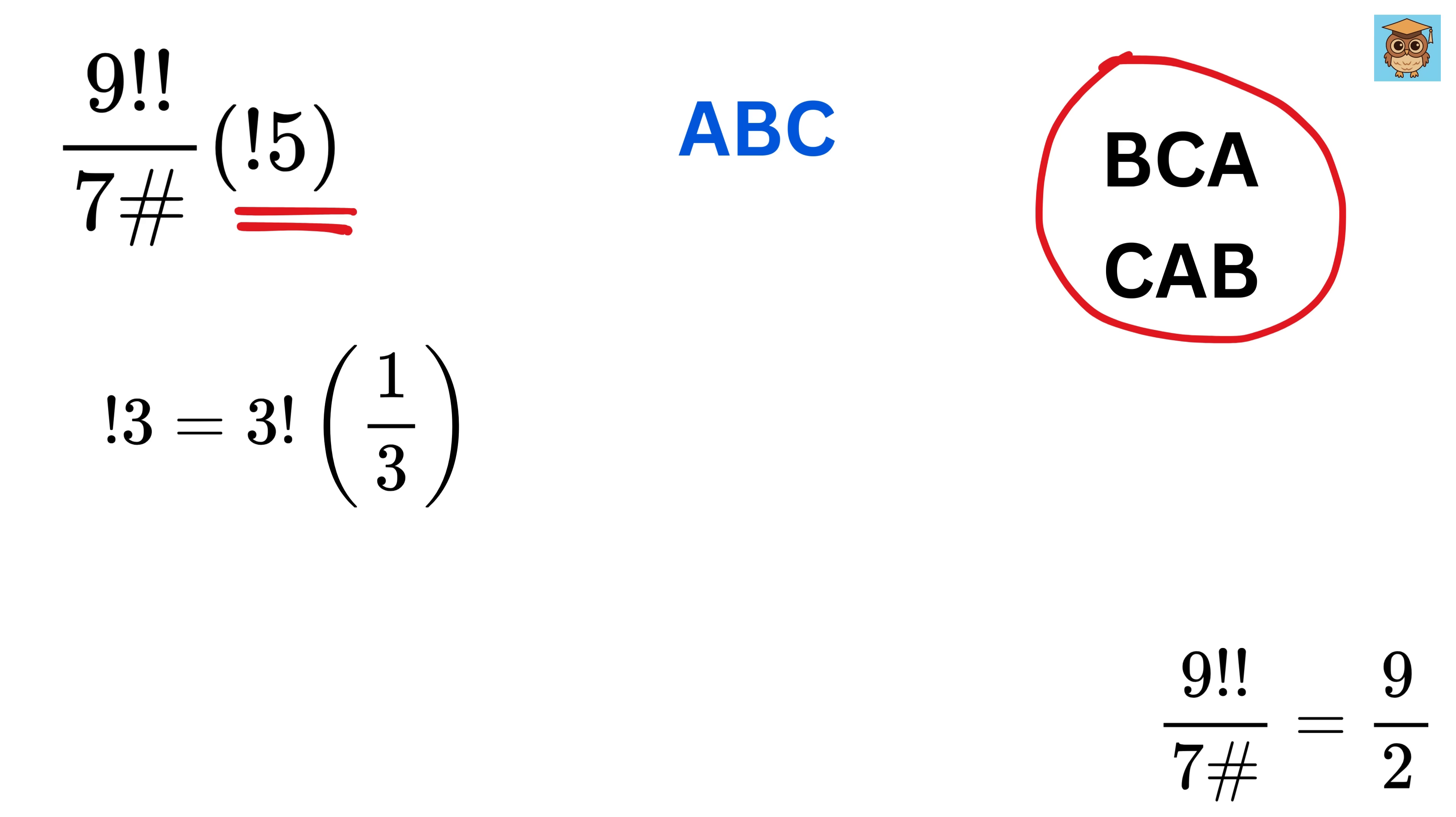After that, we multiply the answer with 3 factorial, which is 6. So we do 6 times 1 divided by 3, which gives 2. That means the sub-factorial of 3 is 2. This tells us that there are 2 ways to arrange 3 items in such a way that none of them remains in their original place. This kind of arrangement is called a derangement.